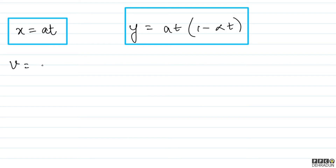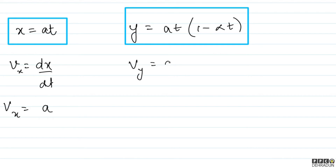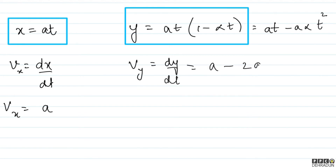From these we can find V. Vx = dx/dt = a, which is constant. For Vy = dy/dt: writing y = at − aαt², differentiating gives Vy = a − 2aαt. So Ax = 0 since Vx is constant.